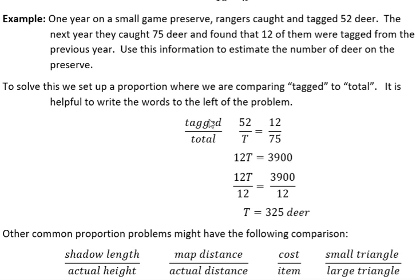And it's helpful to write this tag to total over on the left side so that you get things straight as you write them in. So in the first year they caught and tagged 52 deer, but they didn't know how many deer were in their total. I called that T. T is the total number of deer in the preserve. They don't know what that is.